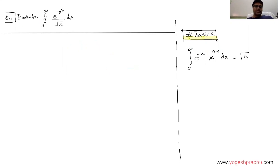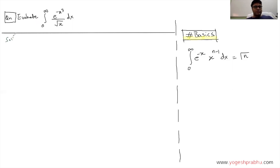We want to evaluate this integral. The solution goes like this: first, it is good practice to assume this integral to be equal to I. So let me write that I is equal to the integral from zero to infinity of e raised to minus x cubed.